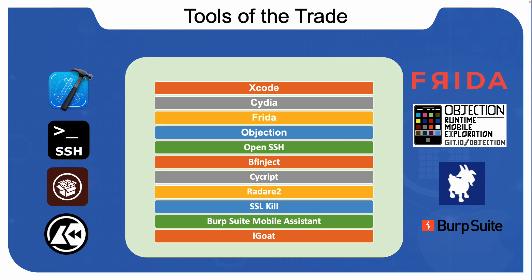Frida is a dynamic instrumentation toolkit for developers, reverse engineers, and security researchers. It lets you inject your own scripts into black box processes. We'll use it to hook any function, spy on APIs, or trace private application code without needing to know the source code of the application.